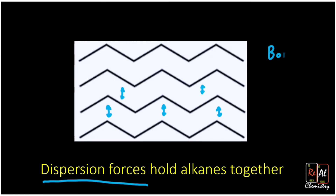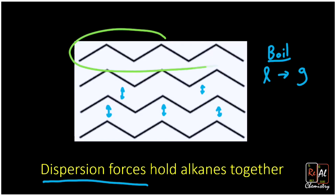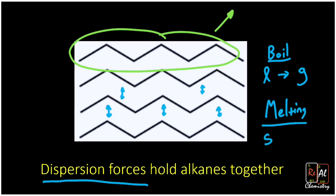It takes energy if you want to pull them apart. For example, if I boil an alkane, I have to take it from a liquid to a gas. In a liquid everything's really close together; in a gas it's all split apart. So to go to a gas, I have to take one of these alkanes and pull it away from its friends — that takes energy and breaks those intermolecular forces. It takes energy to boil things, and similarly it takes energy to melt things, taking something from a solid to a liquid, which breaks all these intermolecular forces.